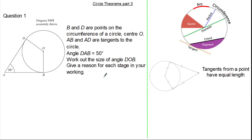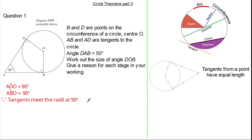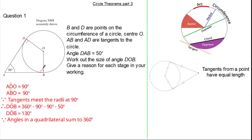Why don't you give it a try and press pause if you need. Here you can see we have a tangent meeting the radius, so therefore angle ADO is 90 degrees. We also have another tangent meeting a radius, so therefore angle ABO is also 90 degrees. This is because tangents meet the radius at 90 degrees. Now we can calculate angle DOB — we have a quadrilateral, so it's simply 360 subtract 90, subtract 90, subtract 50, giving us a final answer of 130 degrees because angles in a quadrilateral sum to 360 degrees.